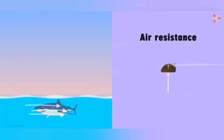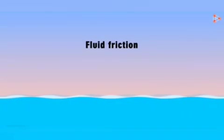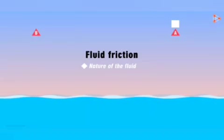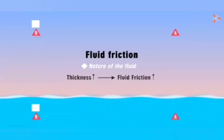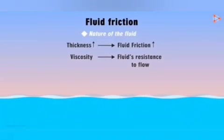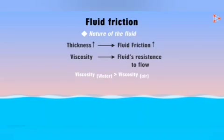The frictional force exerted by fluids is also referred to as drag. The first factor affecting fluid friction is the nature of the fluid. An object moving through water encounters more resistance than one moving through air. The greater the thickness of the fluid, the greater the frictional force. There is a term that describes a fluid's resistance to flow — it's called viscosity. Water is more viscous than air; honey is more viscous than water, which is why it offers more friction.